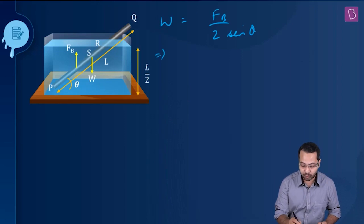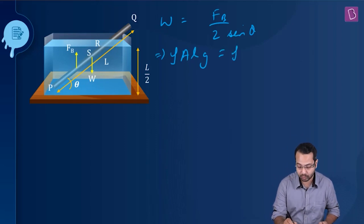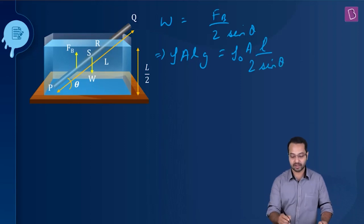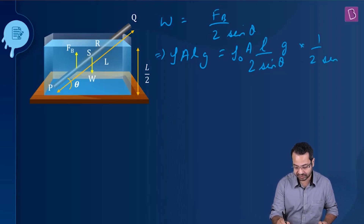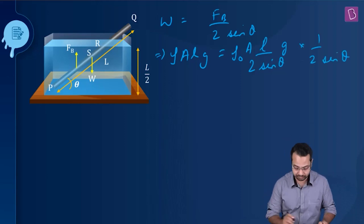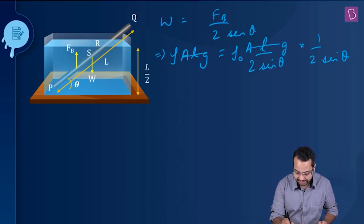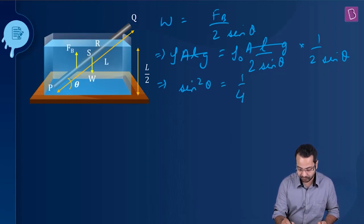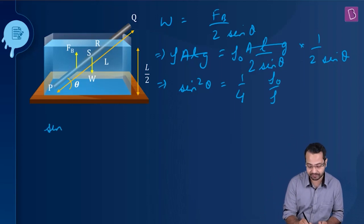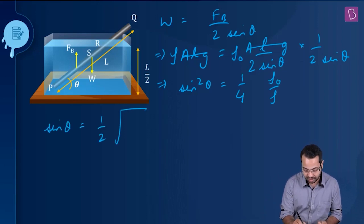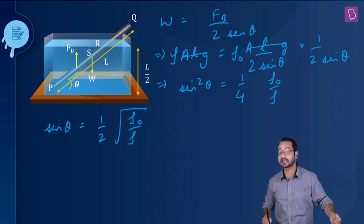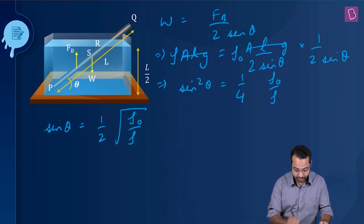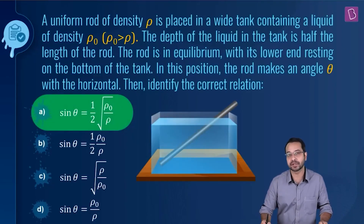After simplifying, sin²θ = (1/4)·(ρ₀/ρ), hence sin θ = (1/2)√(ρ₀/ρ), and that is the answer. Option A is going to be the correct option.